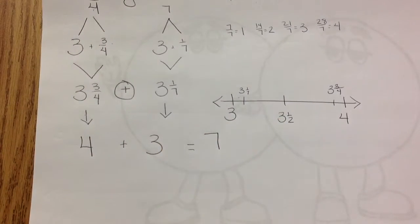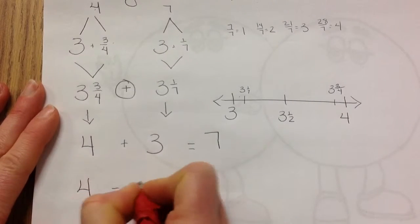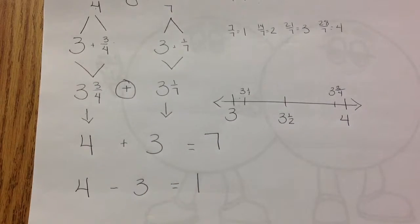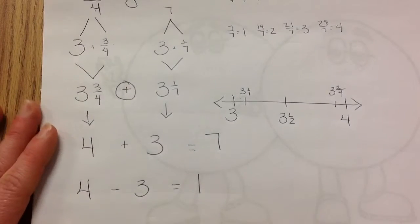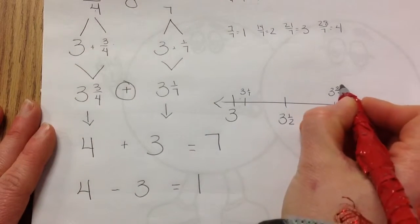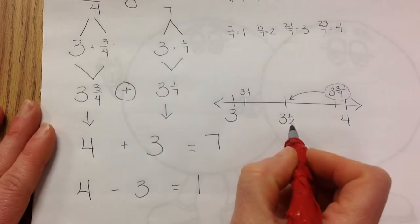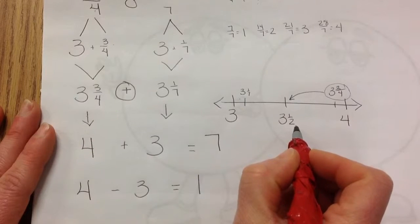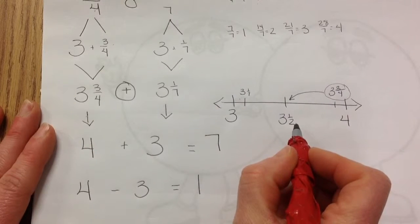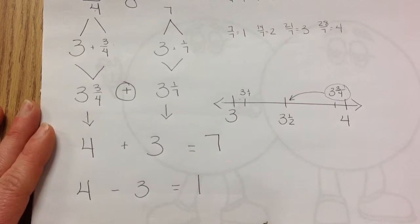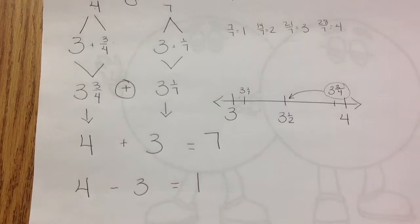I could do the same thing if I were subtracting — they still round to the same thing — so the difference would be one. If I wanted to be even more precise, I could take three and three-fourths and round it to three and a half instead, because that gets much closer to the actual answer. Three and a half plus three is six and a half, or three and a half minus three gives a difference of a half. The closer you round to its actual value, the better off you're going to be.